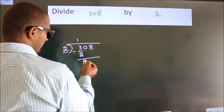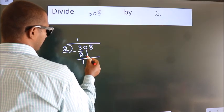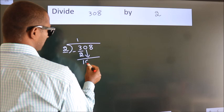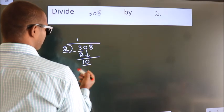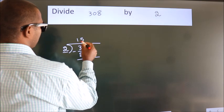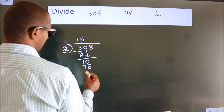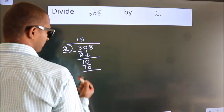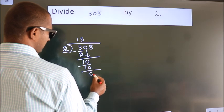After this, bring down the beside number. So, 0 down. So, 10. When do we get 10? In the 2 table, 2 fives 10. Now we subtract. We get 0.